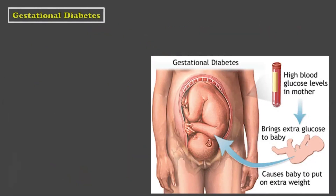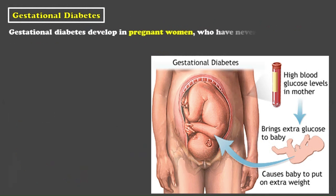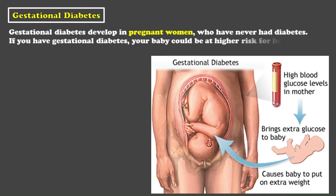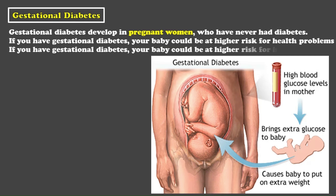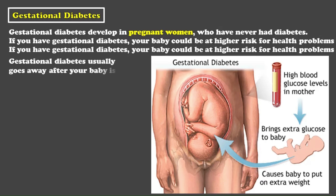The third type of diabetes is called gestational diabetes. It happens in pregnant women who do not have diabetes. If you have gestational diabetes, your baby is more likely to have type 2 diabetes. Gestational diabetes goes away after the baby is born, but because of this, the risk of developing type 2 diabetes increases.